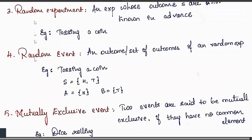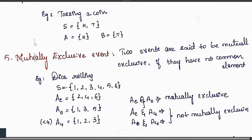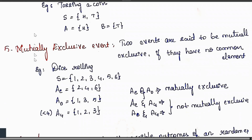A random event is an event or a set of outcomes of a random experiment. For tossing a coin, the sample space is {H, T}; getting a head is one event and getting a tail is another event. Mutually exclusive events — two events are said to be mutually exclusive if they have no common element. For a dice roll, the sample space is {1, 2, 3, 4, 5, 6}; even numbers are {2, 4, 6} and odd numbers are {1, 3, 5} — these two events are mutually exclusive since there is no common element.